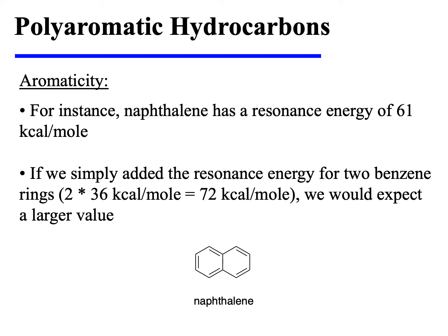For instance, naphthalene has a resonance energy of 61 kilocalories per mole, which is essentially a measure of its unexpected stabilization. If we had simply added the resonance energy for two benzene rings, we would have anticipated a larger value. Each benzene ring has 36 kilocalories per mole of resonance energy, so multiplying that by 2, we would have anticipated 72 kilocalories per mole of stabilization. However, naphthalene has only 61 kilocalories per mole.